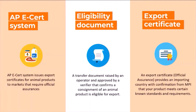Some key terms for this webinar: the AP eCert system is the online system used to issue export certificates for animal products for markets that require official assurances. An eligibility document, also referred to as an ED, is a transfer document raised by an operator in the RMP supply chain and approved by a verifier that confirms a consignment of an animal product is eligible for export. Once you've completed your EDs, you use those to apply for your export certificate, which provides the importing country with confirmation from MPI that your product meets the relevant standards and requirements.